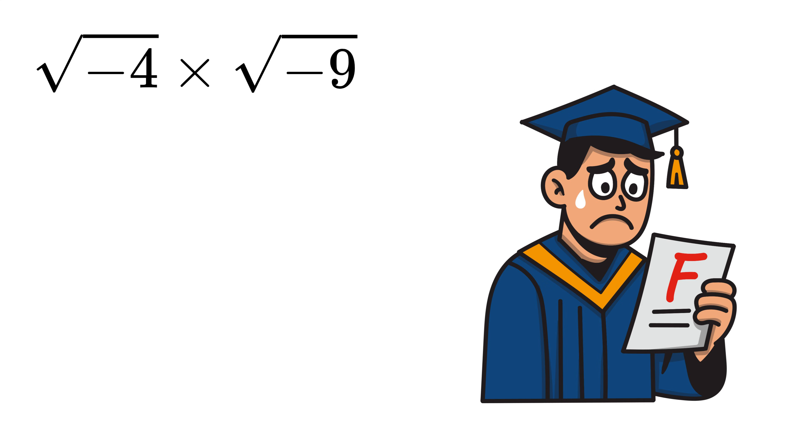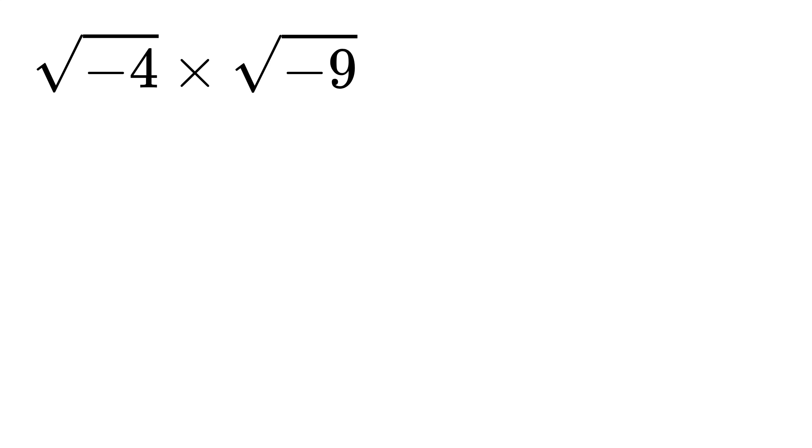Let us first talk about the common mistake that many students make. In school, we learn a rule for square roots that says the square root of one number, say A, multiplied by the square root of another number, say B, is equal to the square root of their product.